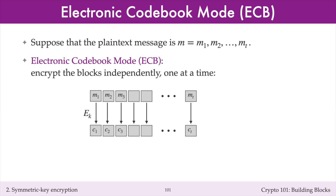So Alice encrypts M1 to C1, M2 to C2, and MT to CT. The receiver Bob would decrypt each ciphertext block independently to recover the plaintext blocks.